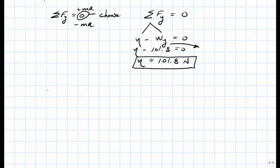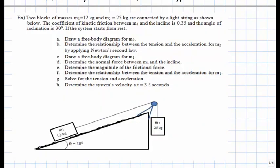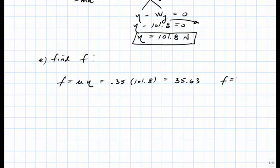In Part E, we want to determine the value of the frictional force. We apply the friction equation: f equals mu times N. Mu was given in the problem as 0.35, and we just calculated the normal as 101.8 Newtons. Multiplying: 0.35 times 101.8 equals 35.63 Newtons. So the frictional force equals 35.63 Newtons.